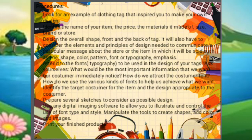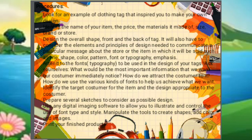Number four: attend to the fonts or typography to be used in the design of your tags. Ask yourselves: what is the most important information we want our customer to immediately notice? How do we attract the customer to it? How do we use various kinds of fonts to achieve what we want? Number five: identify the target customer for the item and design appropriately. Number six: prepare several sketches to consider as possible designs. Number seven: use any digital imaging software to illustrate and control the use of font type and style, manipulate tools to create shapes, add color and images, and print your finished product.